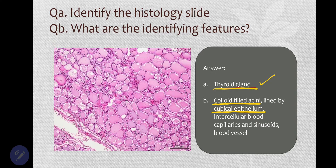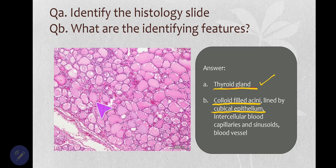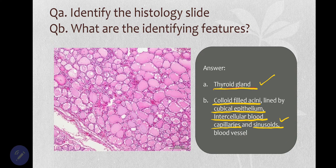Another very important identifying feature relates to endocrine glands: since they are ductless glands, they have blood capillary plexuses surrounding the acini, as well as blood-filled sinusoids. These intercellular blood capillaries and sinusoids are key identifying features — one, two, three — and of course you can also see a blood vessel here.